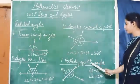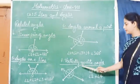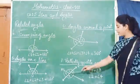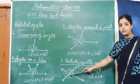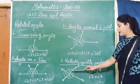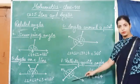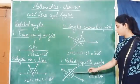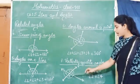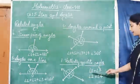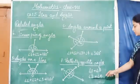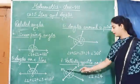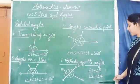Next is vertically opposite angles. We get vertically opposite angles when two lines intersect each other. At the point of intersection, we get four angles: angle 1, angle 2, angle 3, and angle 4. We get two pairs of vertically opposite angles — angle 1 and angle 3 form one pair, and angle 2 and angle 4 form the other pair. Angle 1 equals angle 3, and angle 2 equals angle 4. When two lines intersect, vertically opposite angles are formed and they are equal.